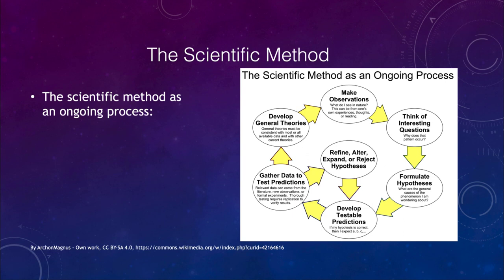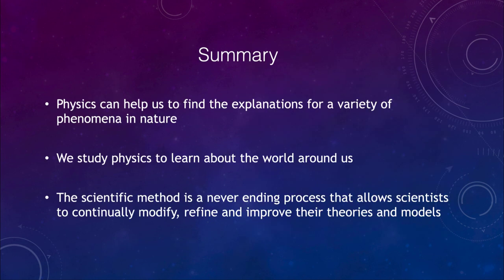Let's finish up here with our summary. We talked about physics as a way of being able to understand and find explanations for a variety of phenomena in nature. We use physics to understand about the world around us and to better understand our world in many ways. We looked at the scientific method. Again, it is a never ending process that allows scientists to continually modify, refine and improve their theories and models to give a better representation of reality.